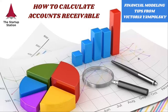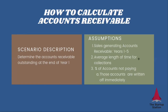Accounts receivable arise when you extend credit to your customers. When that happens, there is a mismatch between the time that you sell the products and the time when you get cash for them. You need to account for the difference when you're considering your liquidity needs and your funding needs. So what we want to do is to determine the accounts receivable outstanding at the end of year one for this example.